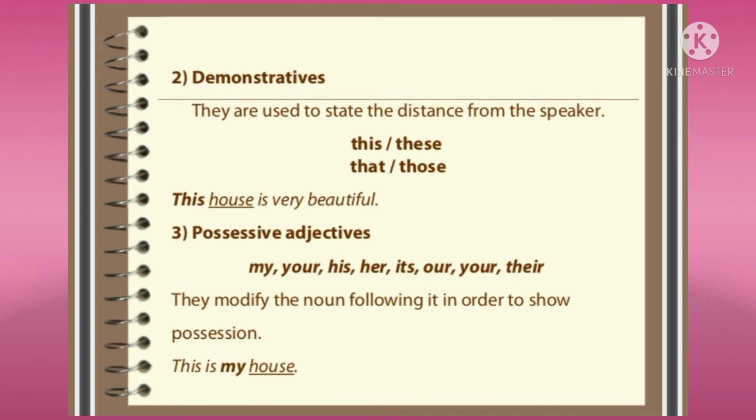The second type of determiners is demonstratives. We have already learned demonstrative adjectives and pronouns: this, that, these, and those are used before nouns — they are called demonstratives and they are determiners. Another type is possessive adjectives: my, your, his, her, its, our, your, their — all used before nouns to qualify them, so these are also called determiners.